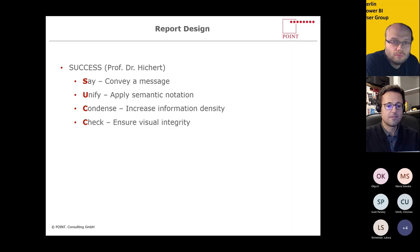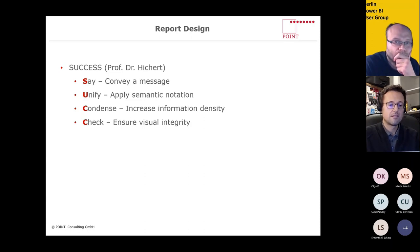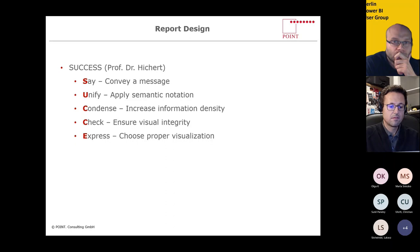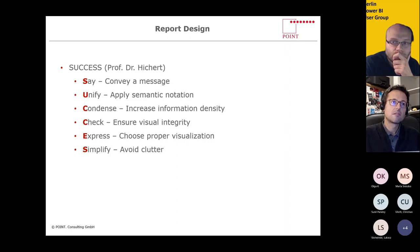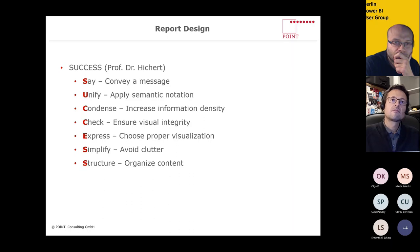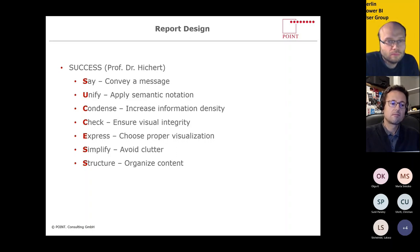Check to ensure visual integrity — report recipients expect correct data, but is the correct data also presented correctly? Manipulated diagrams are commonplace in business communication. Next, express — choose proper visualization. Good visualization starts with choosing the chart or table type that conveys the desired message as quickly as possible. Simplify — avoid clutter. The readability of diagrams and tables is facilitated by removing noise. And finally, structure — organize your content, because reports and presentations often do not have a logical structure, and overlaps and incompleteness make it difficult to understand.